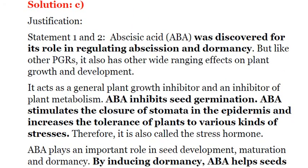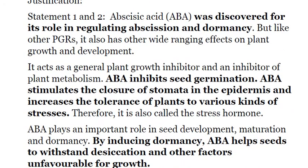Abscisic acid was first discovered for its role in regulating abscission and dormancy. It inhibits seed germination, stimulates the closure of stomata in the epidermis, and increases the tolerance of plants to various kinds of stresses — for example, dry conditions. By inducing dormancy, it helps seeds withstand desiccation and other factors unfavorable for growth. So while it inhibits seed germination, it does so to allow the seed to adjust to adverse climatic conditions, ultimately helping in the growth of plants.